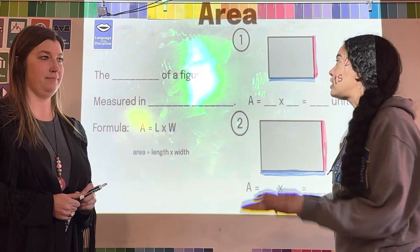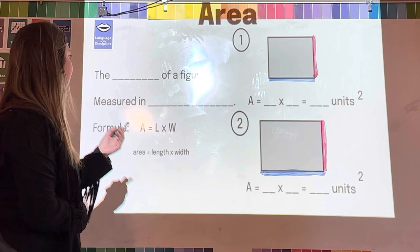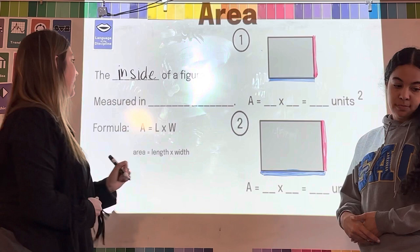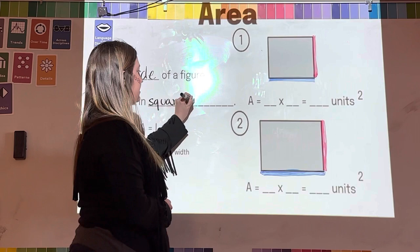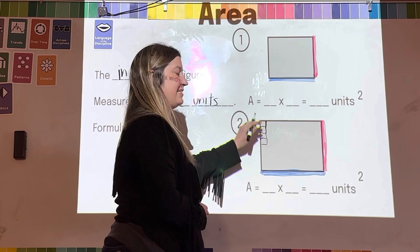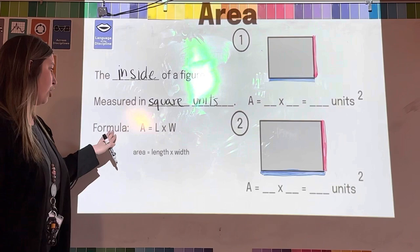All right, so we're going to talk about area first. Area is the inside of a figure. It is measured in square units, and the reason that they're called square units is because we're counting up the squares inside based on the measurements for the length and the width.